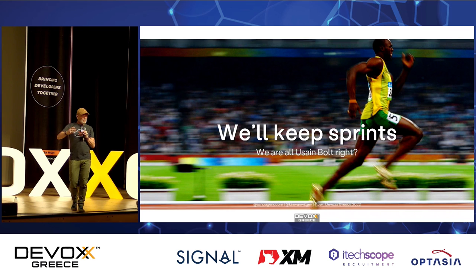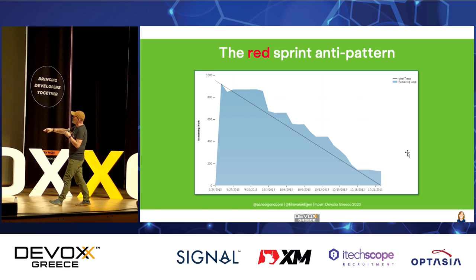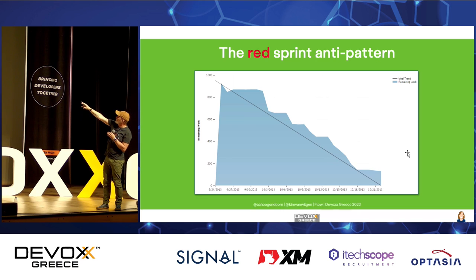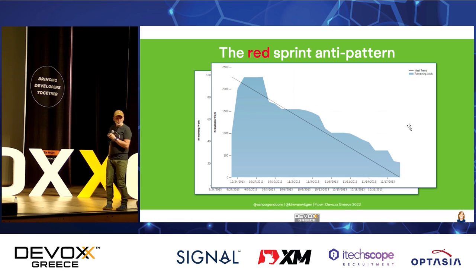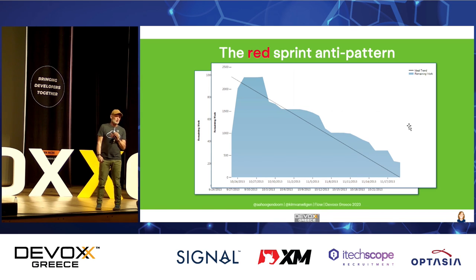By the end of the sprint, you're usually not done — that's what we started calling a 'red sprint.' This burndown chart is from a project in Brussels: they had five sprints, they estimated all the work, and by the end of each sprint they had some work left. The project manager said, 'you guys suck at estimation.' Well, we know that — we're developers, we don't do that. I had a fierce discussion this week about estimation: estimates can never be wrong, it's an estimate, not a calculation.